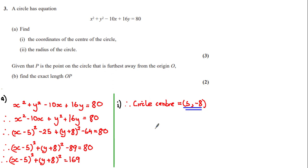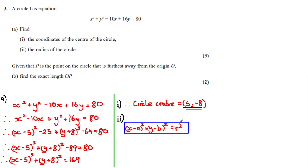For the next part, we can determine the radius since we know that in the form of the equation of a circle, the right-hand side is equal to r squared. Therefore, r squared is equal to 169, and if we take the square root of both sides, the radius r is equal to 13. Just make sure that you set the value on the right-hand side equal to r squared and don't assume it's just equal to r.